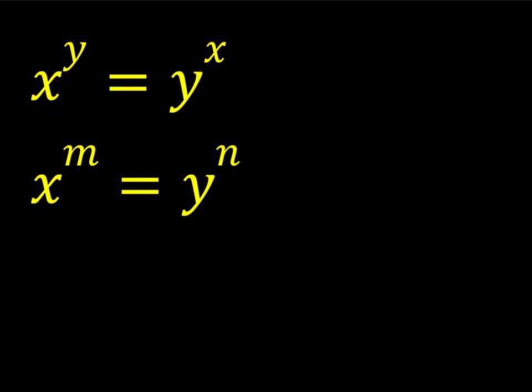So we have x to the power y equals y to the power x, and x to the power m equals y to the power n. There are some restrictions here. m and n are given numbers or parameters. We're going to solve for x and y, and the answer will be in terms of m and n. m and n are both different from 0 and also different from each other.